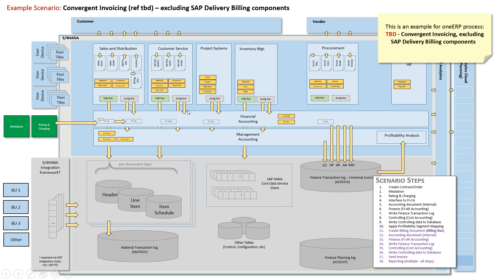Hello. This is the next unit in the SAP data flows for S4HANA series. This is the third example, and it talks about convergent invoicing. It excludes certain SAP delivery billing components which would have been covered in the previous example.